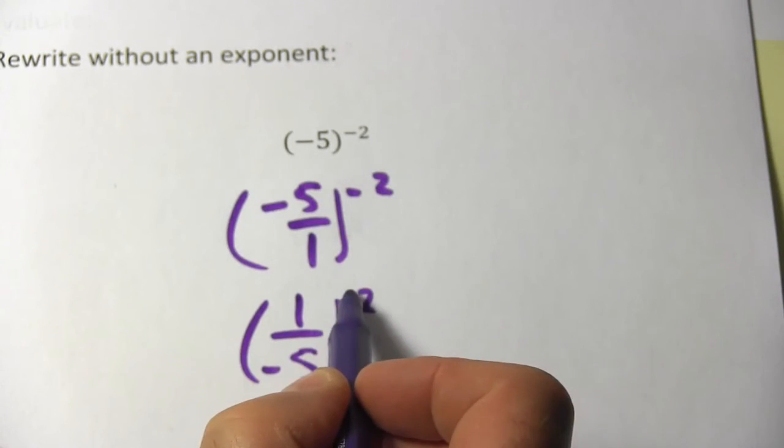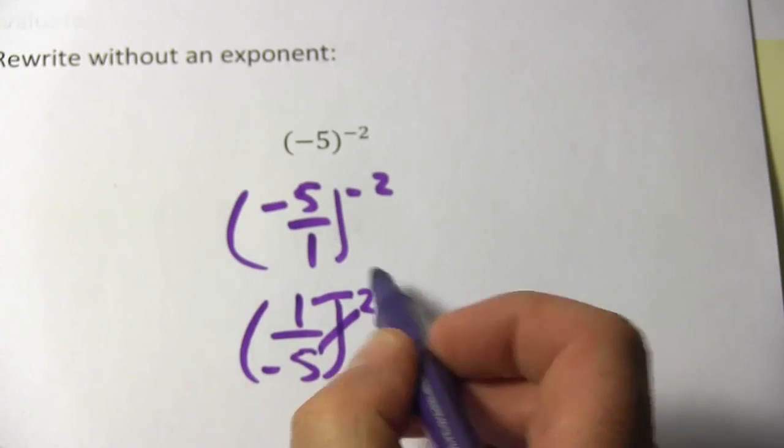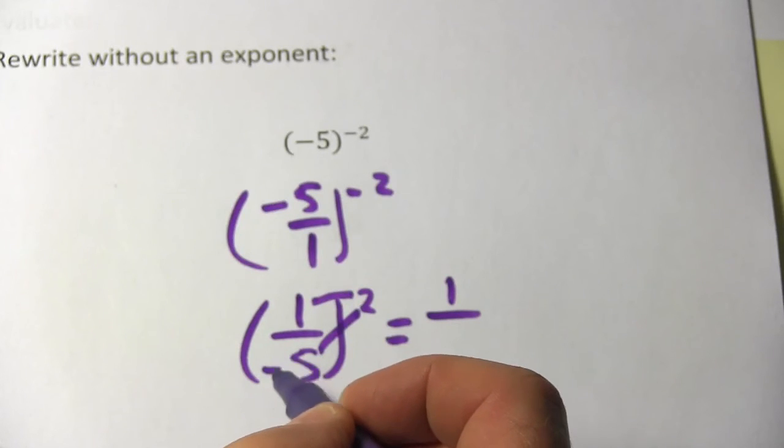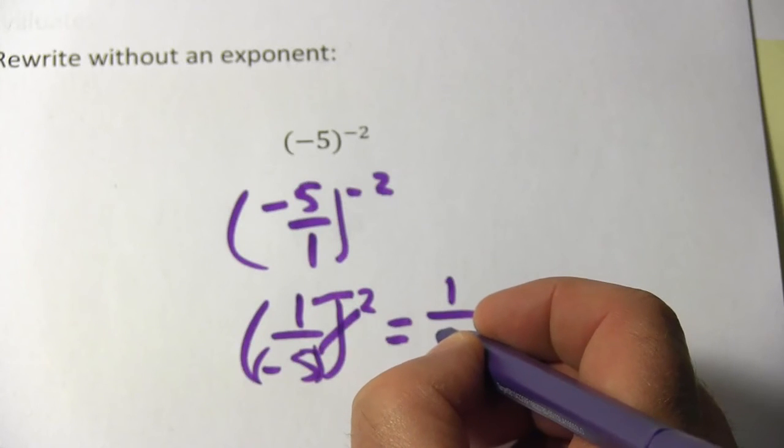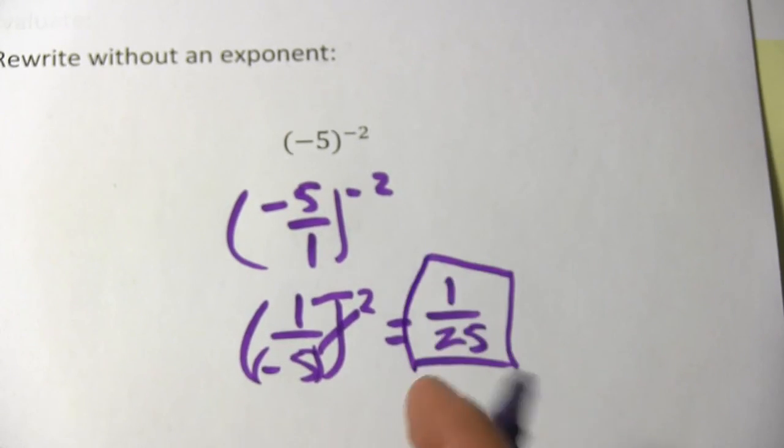And then to apply that second power to a fraction, we just apply it to the top and apply it to the bottom. 1 squared is 1. Negative 5 squared, and you're really squaring this whole thing, so the negative sign becomes positive. The 5 squared is 25, so our answer is one twenty-fifth.